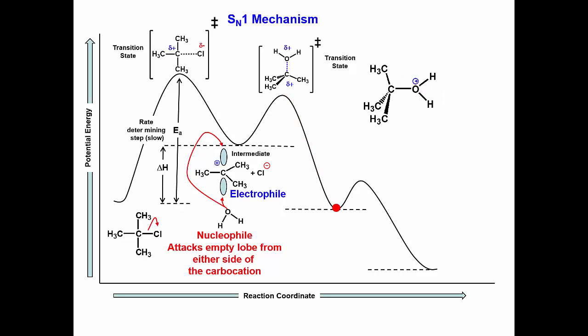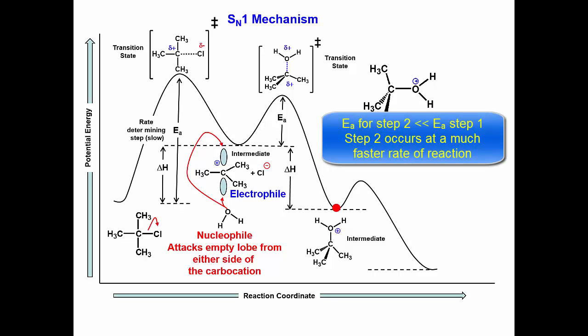The protonated alcohol, or in this example a tert-butoxonium ion, is more stable than the carbocation intermediate and will have a lower potential energy. Thus this reaction is exothermic and the activation energy for this reaction will be much smaller than the first step and will occur at a faster rate.